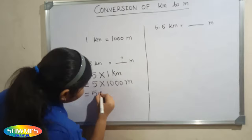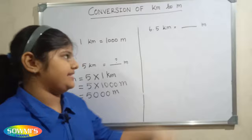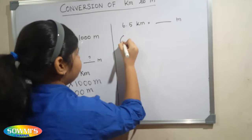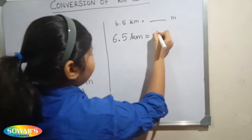Let us take one more example: 6.5 kilometers into meters. 6.5 kilometers is equal to 6.5 multiplied by 1 kilometer.